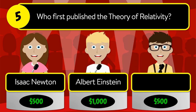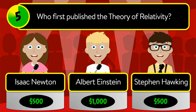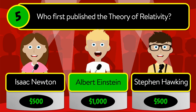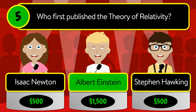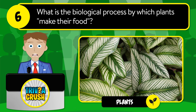Question number five: who published the theory of relativity? Was it Isaac Newton, Albert Einstein, or Stephen Hawking? The correct answer is Albert Einstein.